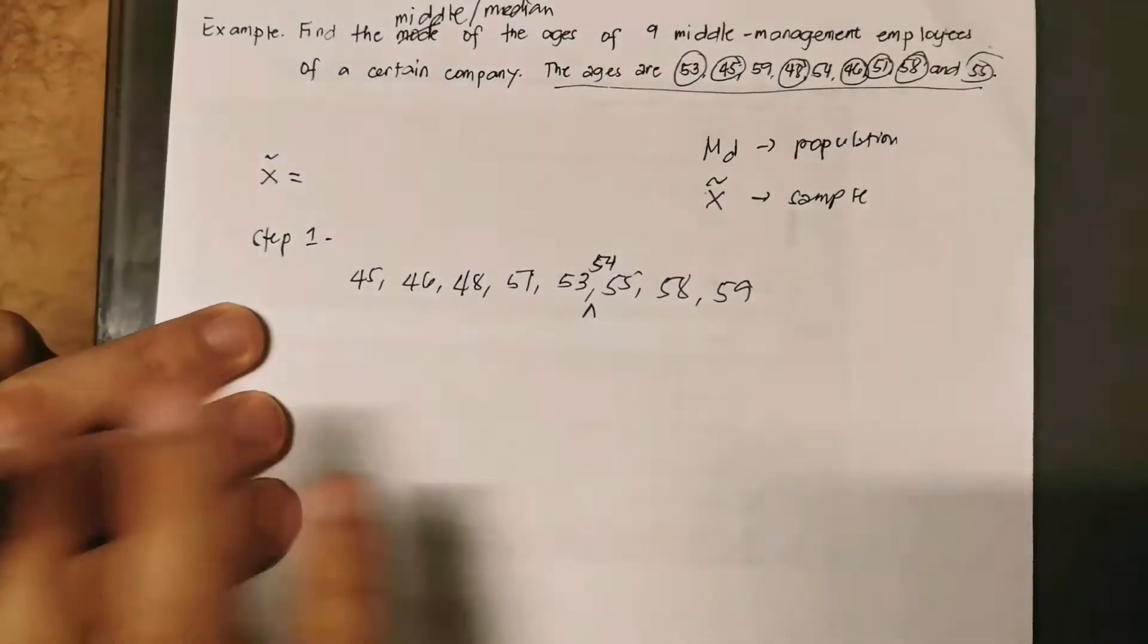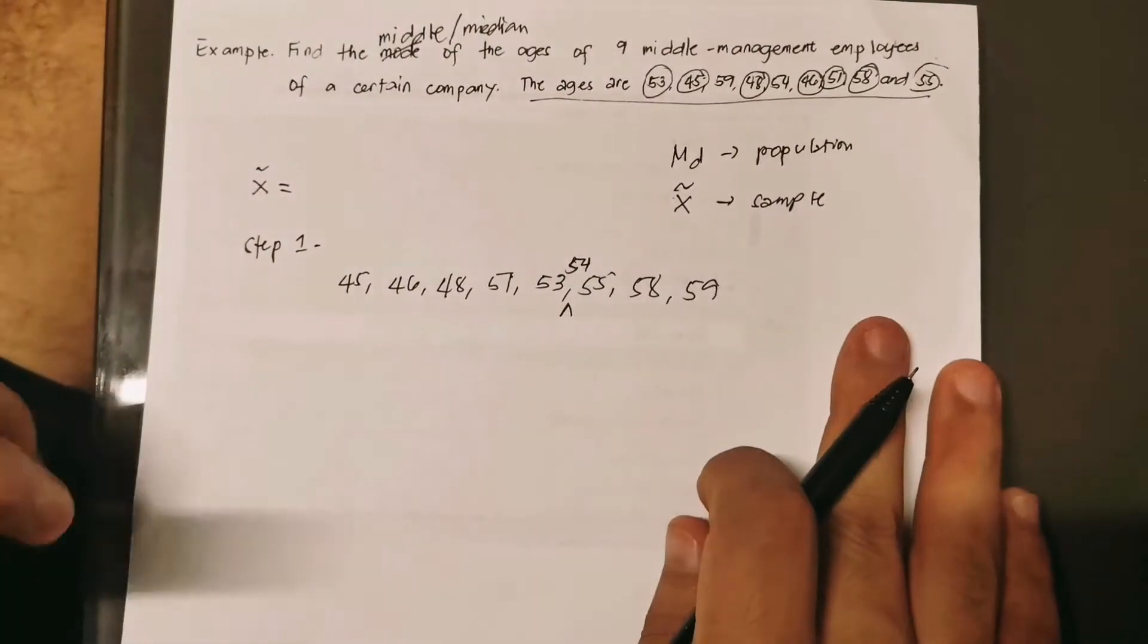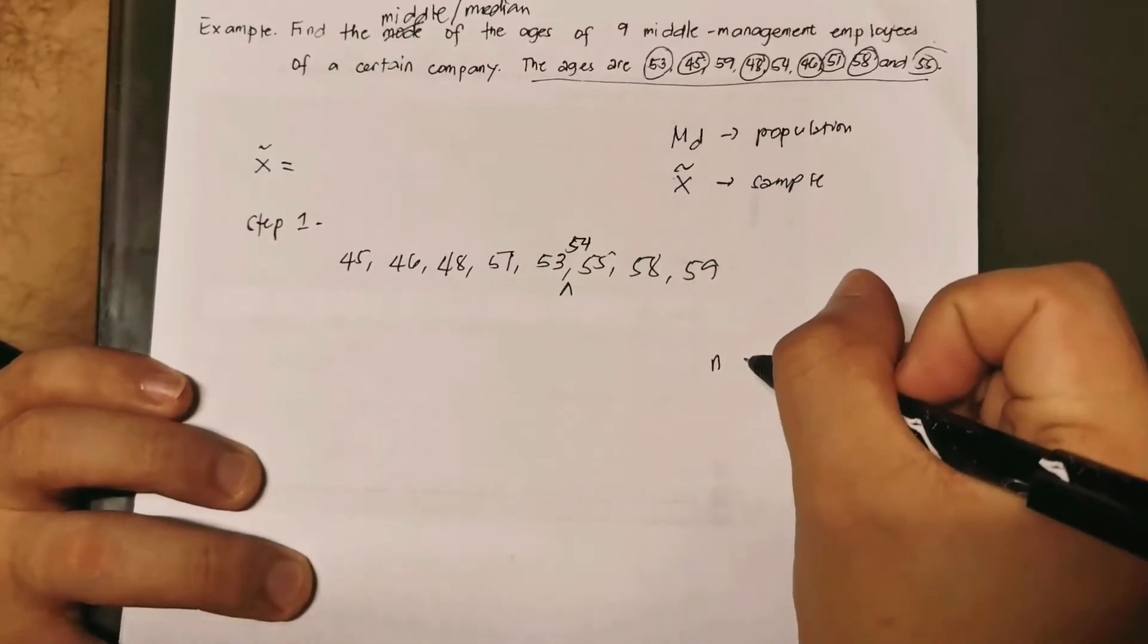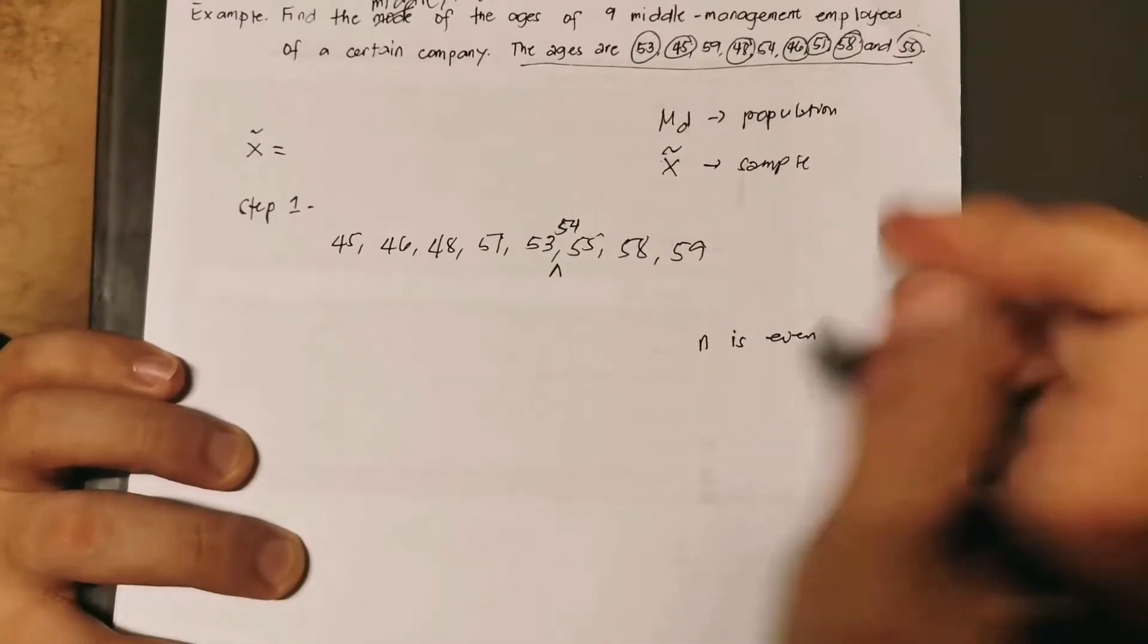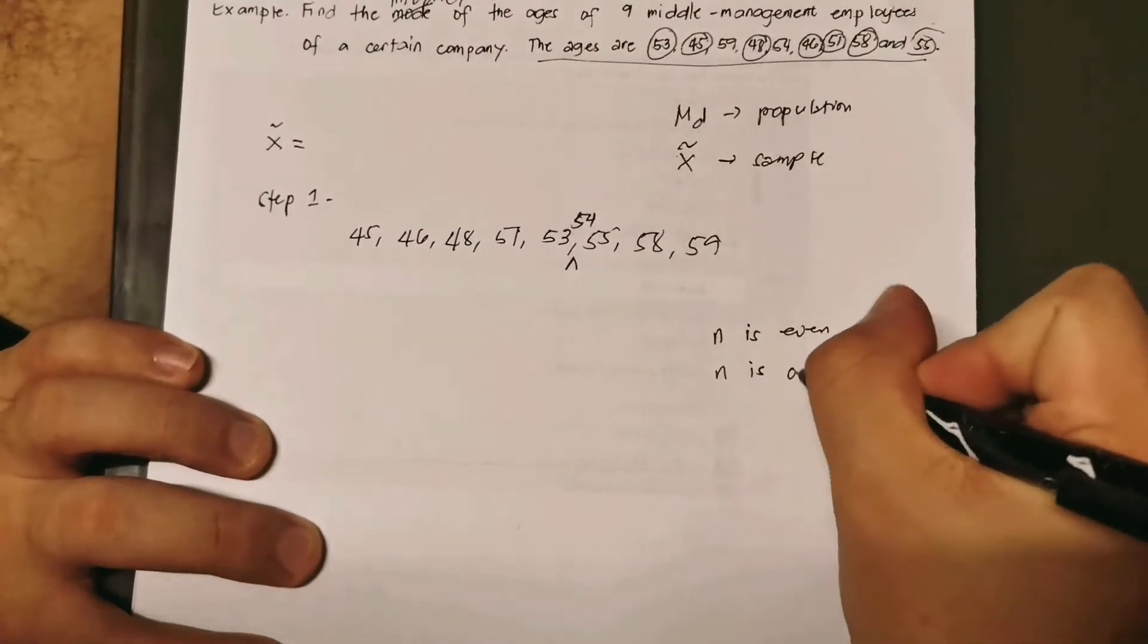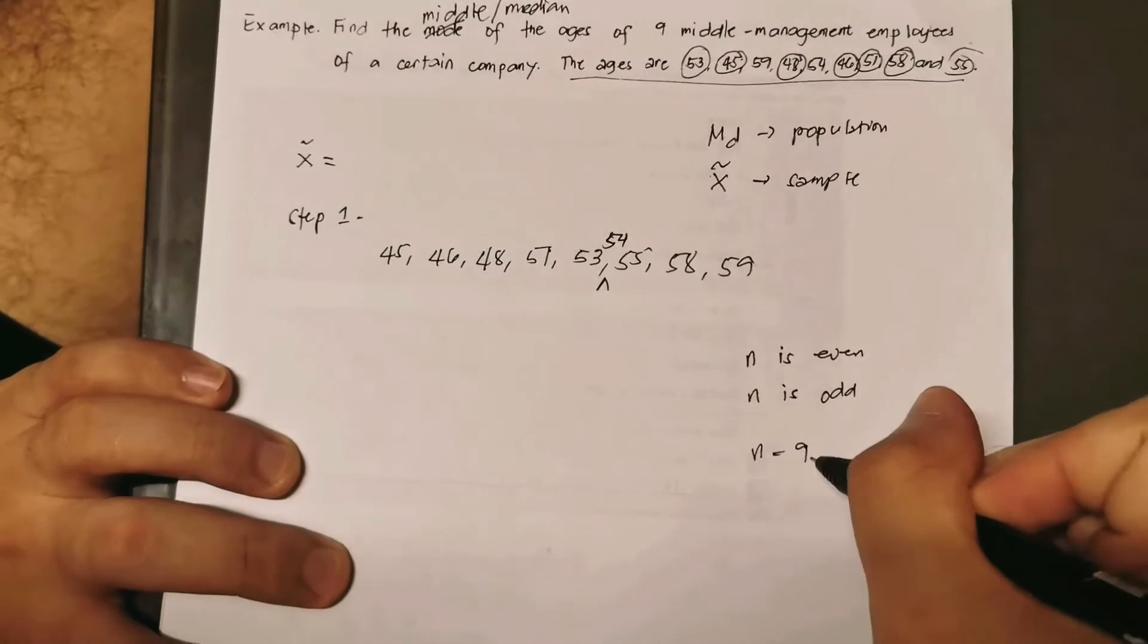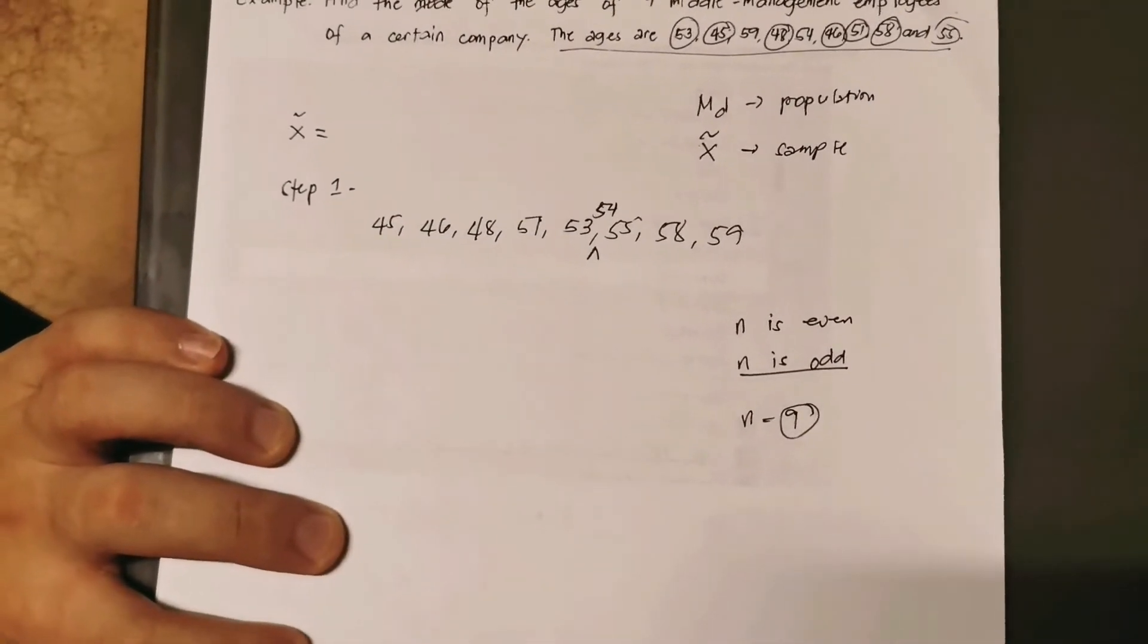I've already arrayed the data from least to greatest. Now this is important: you have to remember that in the case of your n, your sample size, if your n or sample size is even, you have to approach it in a different way. If your n is odd, you also deal with it in a different manner. In this case, our n is 9, so it falls under the odd case of sample size.